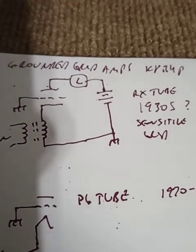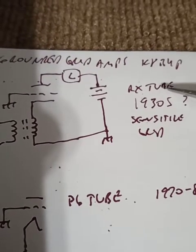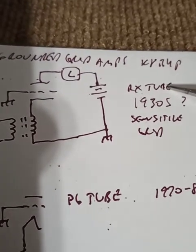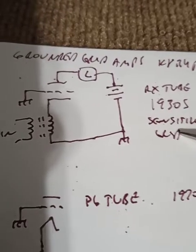Grounded-grid came from, I think it was the 1930s, back with almost entirely received tubes, sensitive grid. Grids can't take any real power.